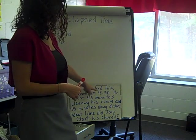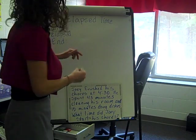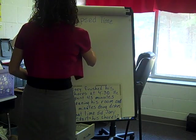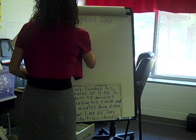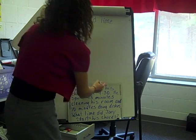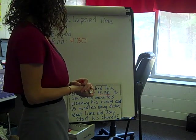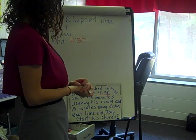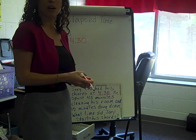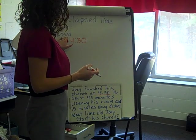So if he finished at 4:30, 'finish' gives me a clue that that's his end time. He spent 45 minutes cleaning his room and 15 minutes doing dishes — those two times give me a clue that that's going to be his elapsed time.